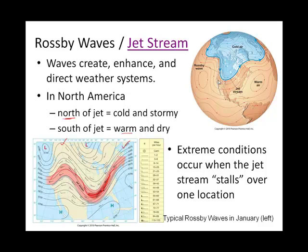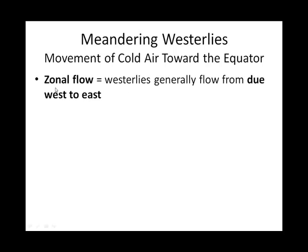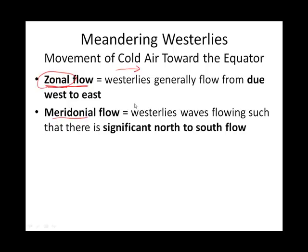Next we're going to talk about how these Rossby waves work. If the Rossby waves are pretty straight — in other words, if there aren't very many Rossby waves — we say that the flow is zonal. I remember the word zonal like a football player making a pass to the end zone: it's going to be straight. Zonal flow is the opposite of meridional flow, and meridional flow would be the waviness — significant north and south flow with the waves.